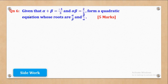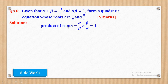Now we shall go to question 6. Question 6 says: given that α + β = −1/3 and αβ = 2/3, form a quadratic equation whose roots are α/β and β/α. It was 5 marks, so let's see how those marks can be got. First you have to get the product of the roots. The product of α/β and β/α is α/β times β/α — alpha and beta cancel, leaving 1.